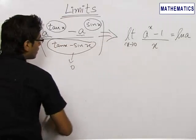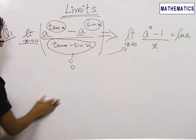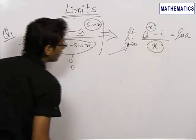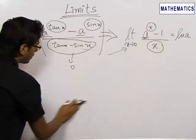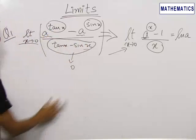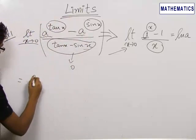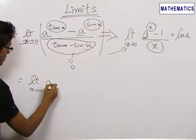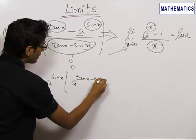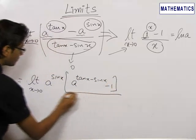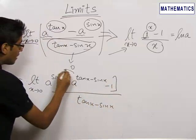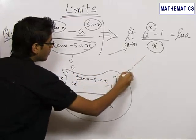So we try to do this question with the help of this formula. In this formula we have x in the denominator and the same power of a. Here we have tan x minus sin x in the denominator, so we try to make the power of a equal to tan x minus sin x. We can do this by bringing a^(sin x) outside, to make limit x tending to 0 of a^(sin x) times a^(tan x minus sin x) minus 1 upon tan x minus sin x. This is clearly similar to the formula.